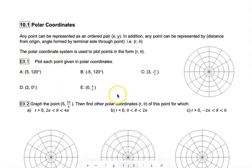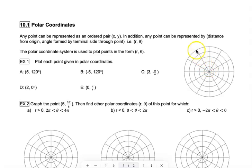In example one, we are just practicing plotting each point on a polar coordinate plane, which kind of looks like a spider web. Each tick mark on the concentric circles represents a distance of one, so the circles go out to radii of one, two, three, four, and five on this grid. When it says 5, 120, that means the point is going to be on the outermost circle.